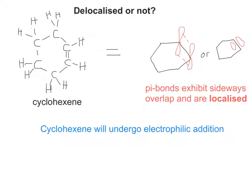When looking at whether a double bond is delocalised or not, let's look at cyclohexene as an example. If you draw the pi orbitals above and below the carbons where the double bond is involved, you can see they overlap. Because of this, the double bond in cyclohexene will undergo electrophilic addition with bromine or chlorine.